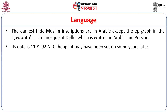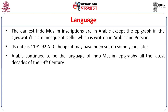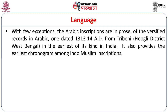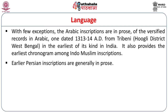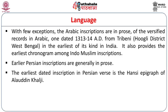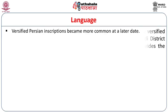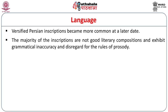Arabic continued to be the language of Indo-Muslim epigraphy till the last decades of the 13th century AD. But with the rise of the Khaljis from about the beginning of the 14th century, a few Arabic inscriptions are in prose, and earlier Persian inscriptions are also generally written in prose. The earliest dated inscription in Persian verse is the Hansi epigraph of Alauddin Khalji. Versified records in Arabic are the earliest of their kind in India. It also provides the earliest chronogram among Indo-Muslim inscriptions. Versified Persian inscriptions became more and more common at a later date. The majority of the inscriptions are not good literary compositions and exhibit grammatical inaccuracy and disregard for the rules of prosody.